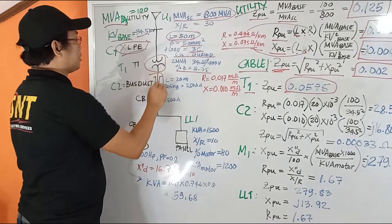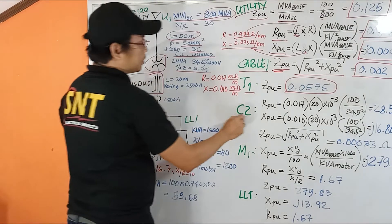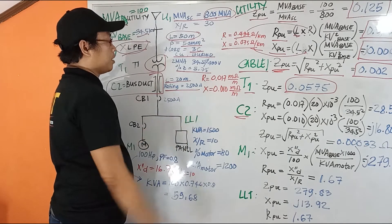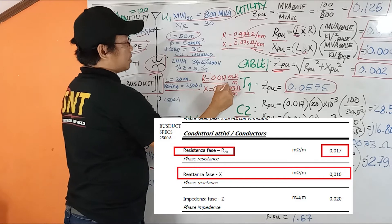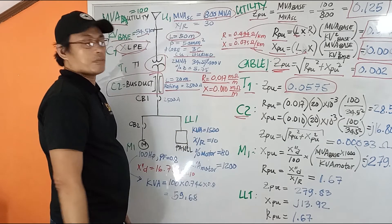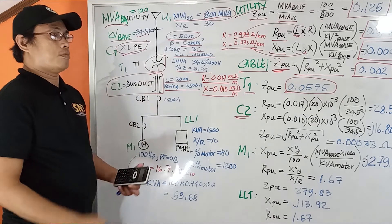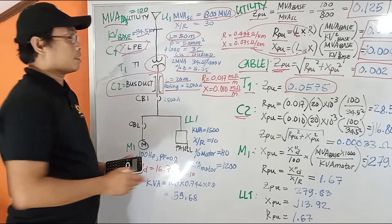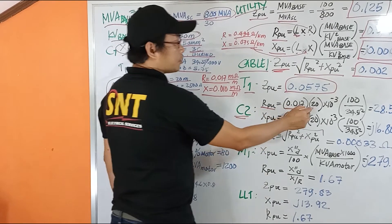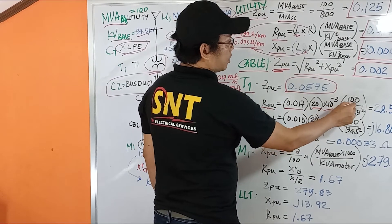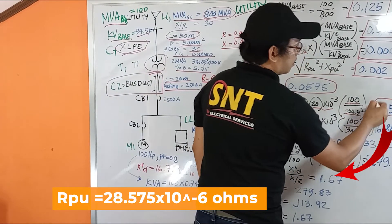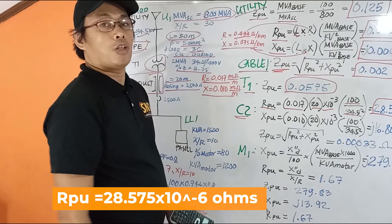So then our bus dock here, which is our cable number two. After getting all the information, which is given the length as 20 meters, the rating at 2,500 ampere, it was given the resistance at 0.017 milli ohm per meter and the reactance at 0.010 milli ohm per meter. So the bus dock is considered zero impedance. So let's calculate that. Resistance per unit: 0.017 times the 20 meters times 10 to the negative 3. Very small.